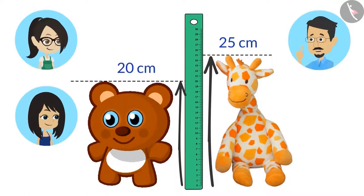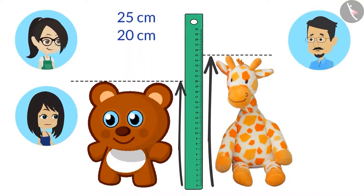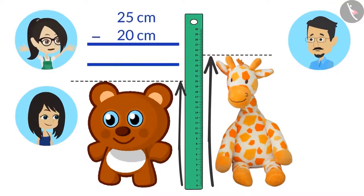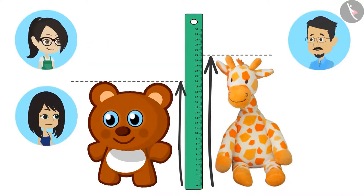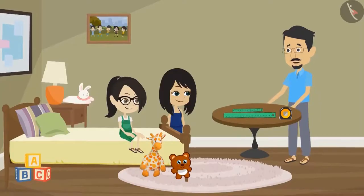Can you both tell how much shorter the bear is than the giraffe? Yes, Uncle. We will subtract the height of the bear from the height of the giraffe. The height of the giraffe is 25 centimeters and the height of the bear is 20 centimeters. Subtracting 20 centimeters from 25 centimeters will leave us with 5 centimeters. This means that the giraffe is 5 centimeters taller than the bear. You both answered it correctly.